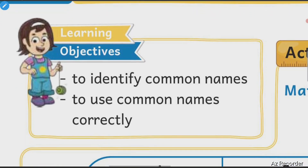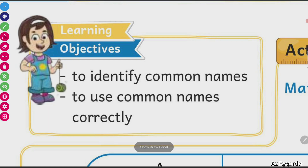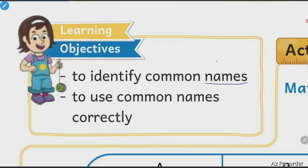Common names are nothing but common noun. Nouns are names of animal, place, person or thing. So in this chapter, we will learn about the general names for a person, a place, an animal or a thing. We will learn to identify the names of a person generally used in a sentence, a place, an animal, or a thing correctly.